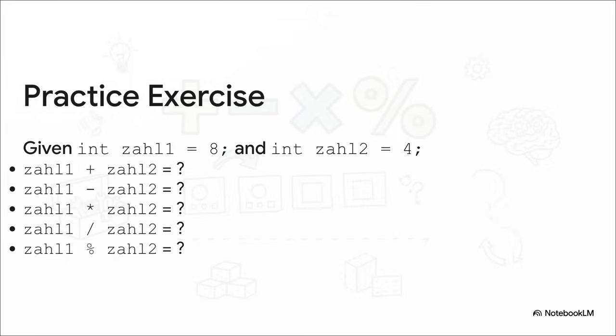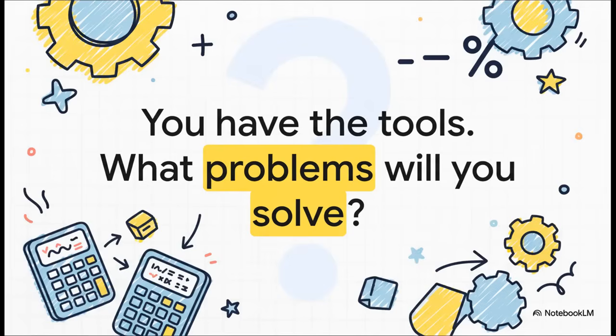Now, to really make all this sink in, you gotta try it yourself. So here's a little challenge for you. On your own time, create two integer variables, one for 8 and one for 4. Then just run through all five of the operators we learned today. Actually, seeing the results pop up is the absolute best way to build that programming muscle memory. So think about where we are. We've gone from seeing variables as just boring storage containers to understanding they're dynamic tools you can use to create and solve things. You now have the fundamental arithmetic toolkit for programming. So the only question left is, what are you going to build with it? Thanks for watching.